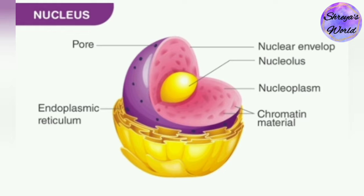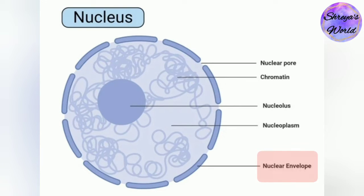The nuclear membrane is present in both plant and animal cells. Cells carry out a multitude of functions, such as protein building, conversion of molecules into energy, and elimination of unnecessary products. This membrane guards the genetic material of the cells against the exterior of the nucleus, where chemical reactions are taking place.